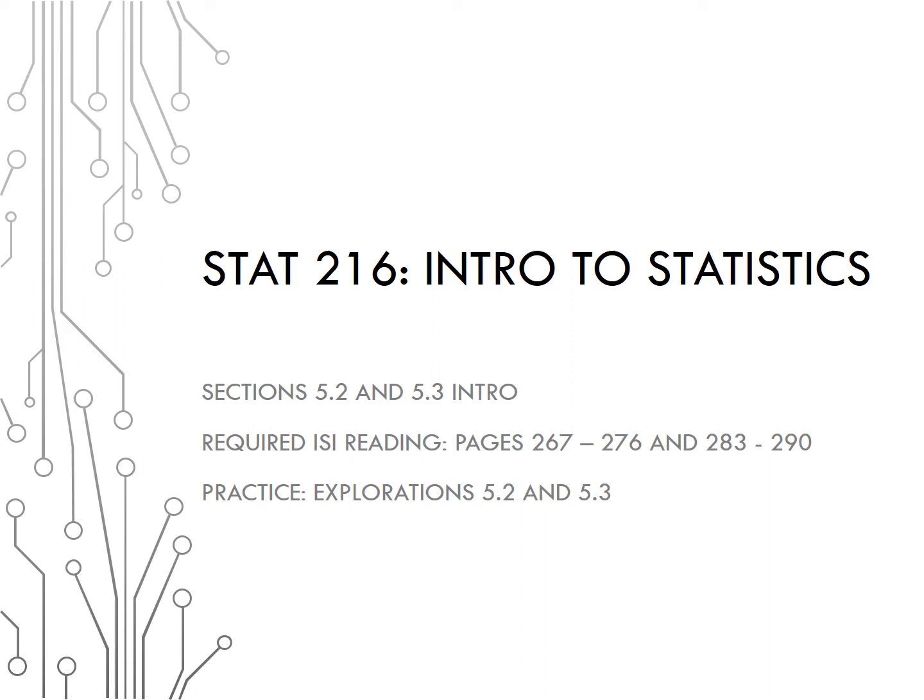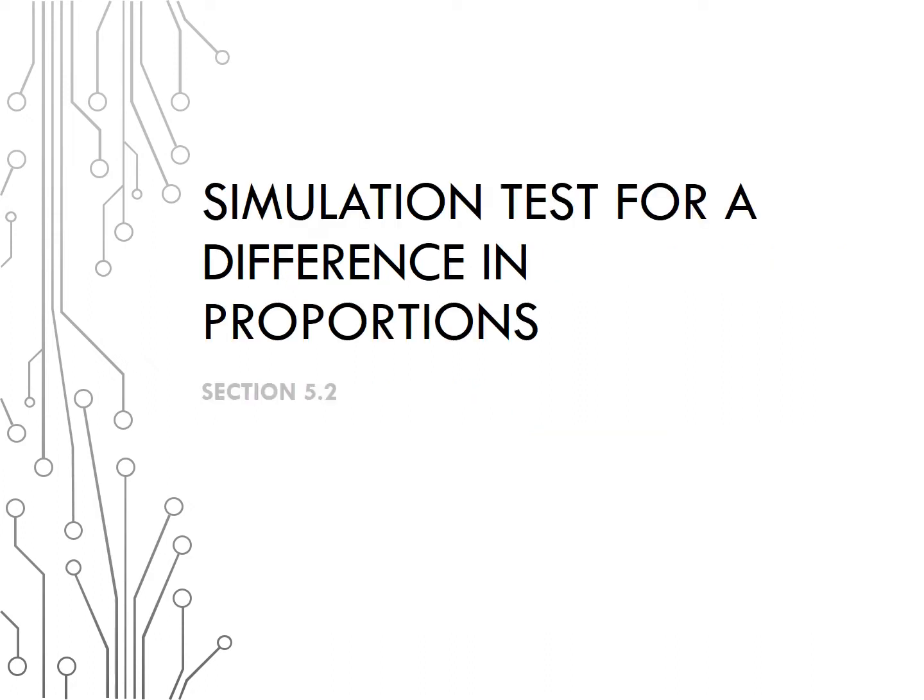Topics covered are in pages 283 through 290 in your textbook. In section 5.2 we will discuss a simulation test for a difference in proportions.